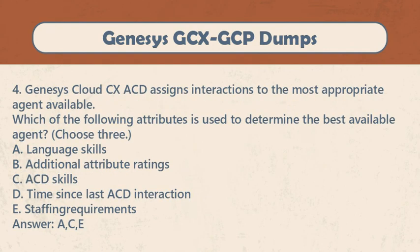Question 4. Genesys Cloud CX ACD assigns interactions to the most appropriate agent available. Which of the following attributes is used to determine the best available agent? Choose 3. A. Language skills. B. Additional attribute ratings. C. ACD skills. D. Time since last ACD interaction. E. Staffing requirements. Answer: A, C, E.